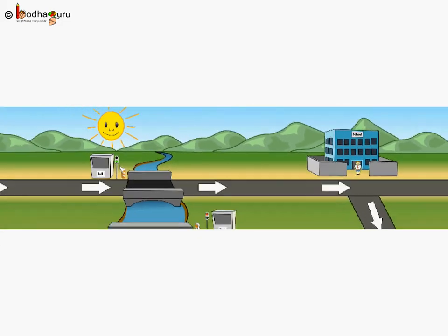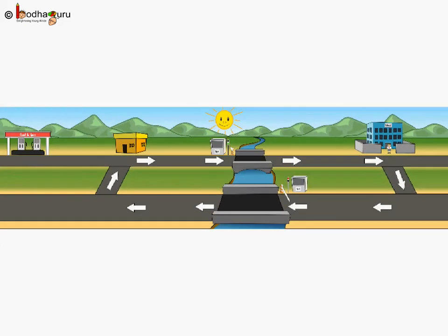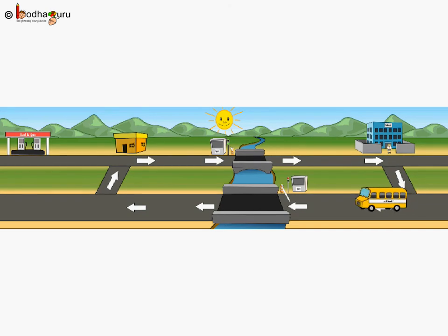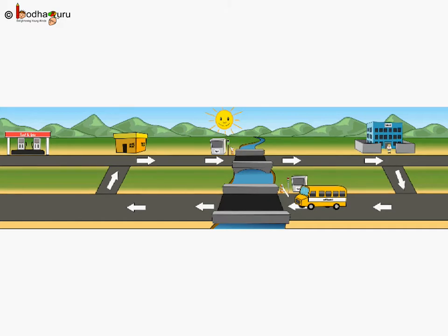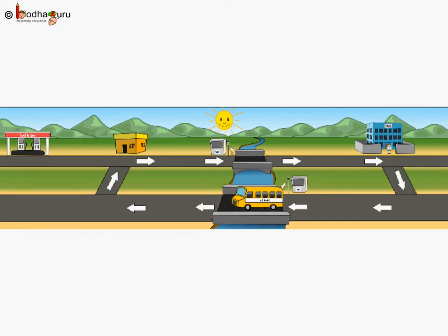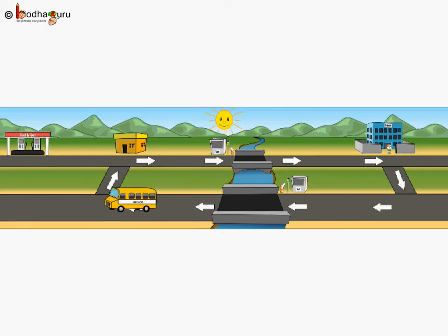While coming back, the bus needs to cross the river again but by using the bridge B. At the entry of bridge B, again there is a toll booth. After paying, the gate is opened and now the bus can cross the bridge and reach Aman's home.